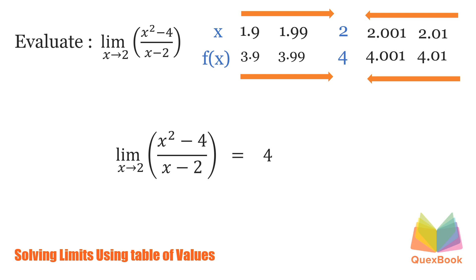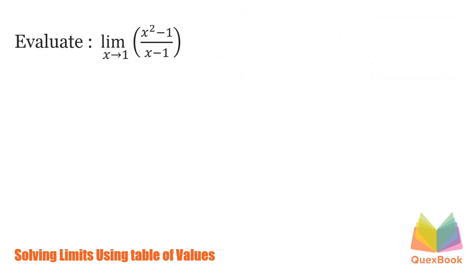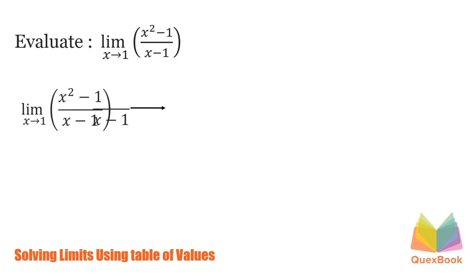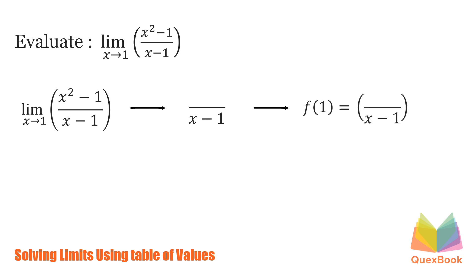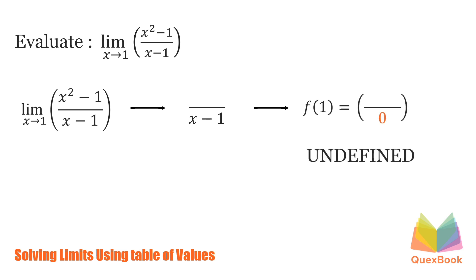How about this next example? Find the limit of x squared minus 1 over x minus 1 as x approaches 1. Now, since the denominator is x minus 1, if we plug in our x, which is 1, to the equation, it will surely give us an undefined answer. So let's prove: 1 minus 1 is 0. Any number that has a 0 in the denominator is considered undefined. So to solve this limit, let's try to plug in numbers that are approaching to 1.